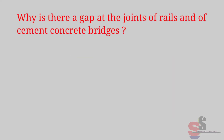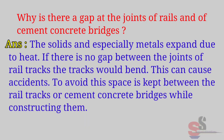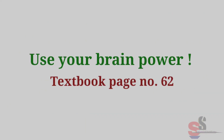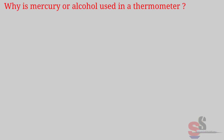Use Your Brain Power, textbook page 62: Why is there a gap at the joints of rails and of cement concrete bridges? Answer: Solids, and especially metals, expand due to heat. If there is no gap between the joints of rail tracks, the tracks will bend, which can cause accidents. To avoid this, spaces are left between the rail tracks or cement concrete bridges while constructing them.